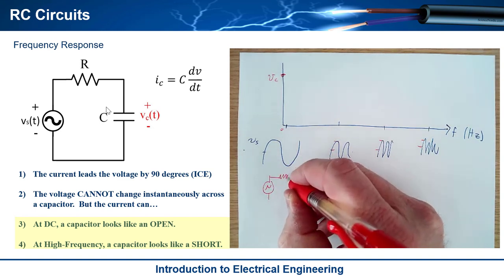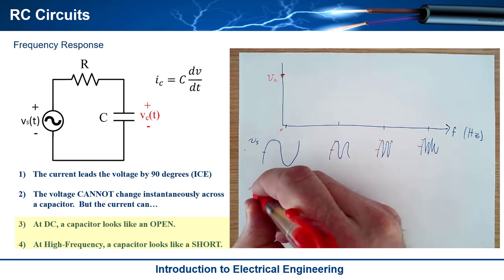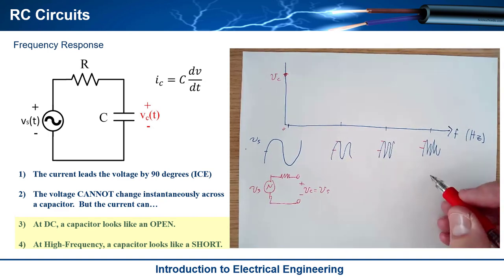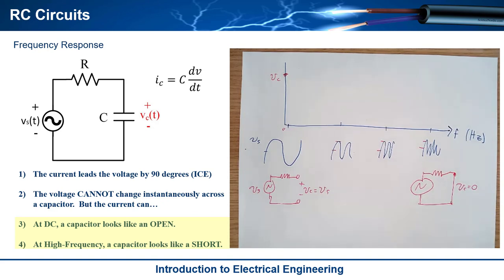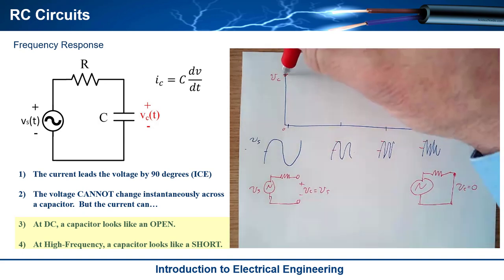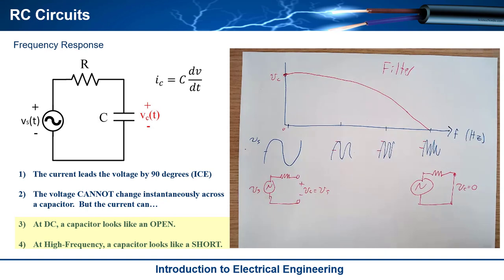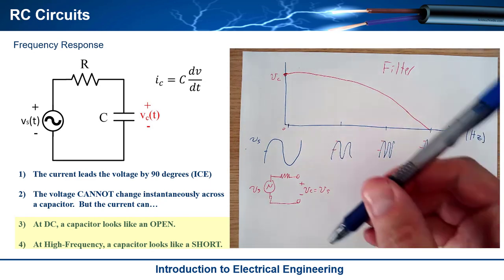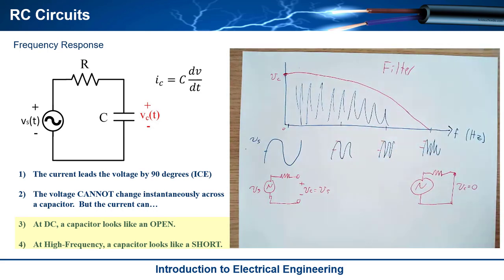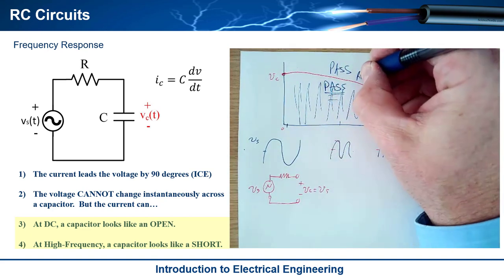That's because the circuit looks like an open at DC — basically you have some source with an open circuit, no current flows, so all the voltage Vc equals Vs. Over here at really high frequency, you're going to have a short circuit, and Vc is going to equal zero because you can't develop a voltage across a wire. As you go out in frequency, this goes down and down. This is what's called a filter — a circuit that allows some frequencies to pass through and stops other frequencies. The frequencies in the lower range are called the pass band.